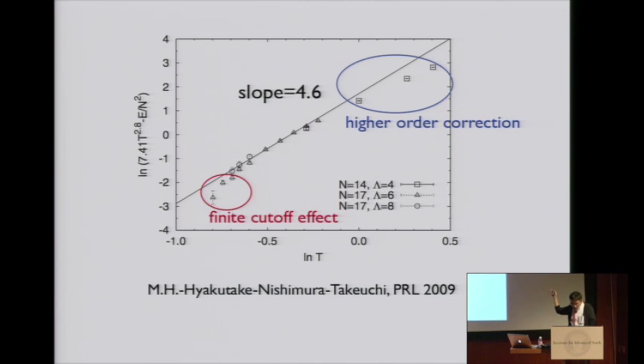At the low temperature, regularization artifact appears. Because for low temperature, we need a larger lattice. But our lattice is not large enough, so finite cutoff effect appears at low temperature. But at the intermediate region, we can correctly see this power law behavior.